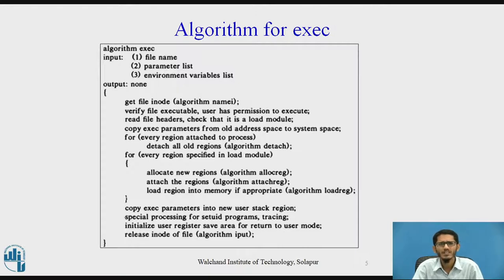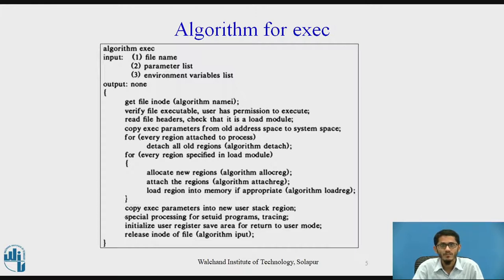For every region attached to the process, it detaches all old regions using the algorithm detachreg. Then for every region specified in the load module, it allocates new regions using the algorithm allocreg. It then attaches the region using algorithm attachreg, loads the region into memory if appropriate using algorithm loadreg, copies the exec parameters into the new user stack region, does special processing for setuid programs and tracing, initializes the user register save area for return to user mode, and finally releases the inode of the file using the algorithm iput.